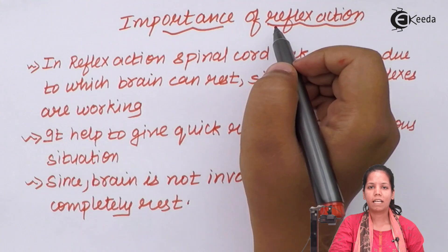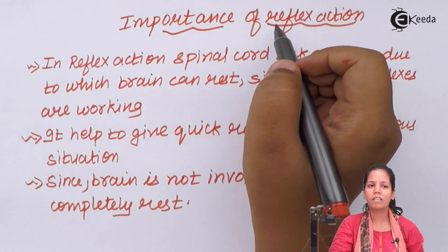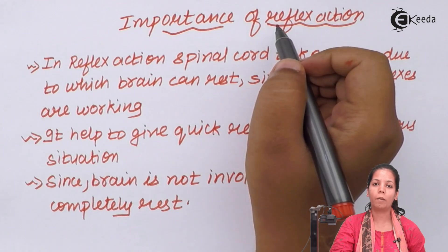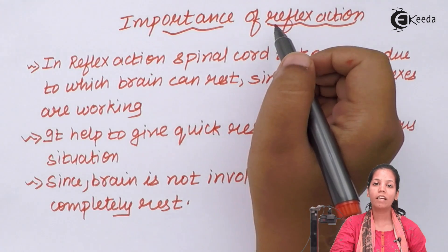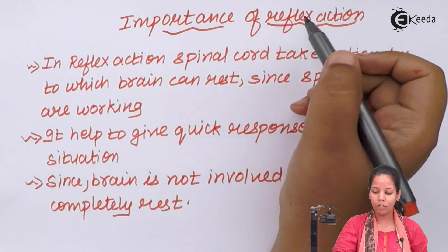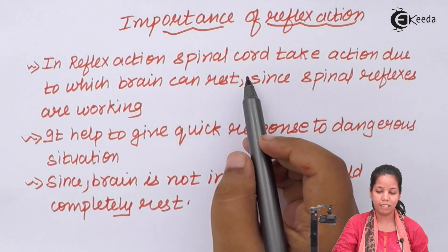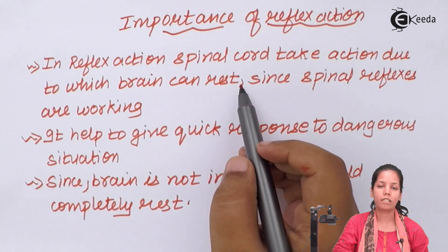Importance of reflex action: blinking of eyes, and whenever there is some danger — like a tiger or lion just behind you about to catch you — the sudden response you take is reflex action. This is governed by the spinal cord; specifically, the gray matter of the spinal cord takes this action, and the brain can completely rest at that point.